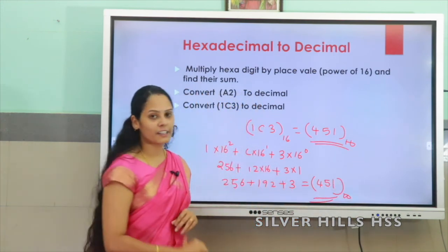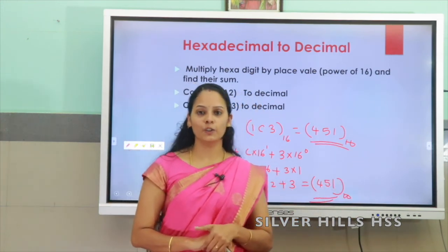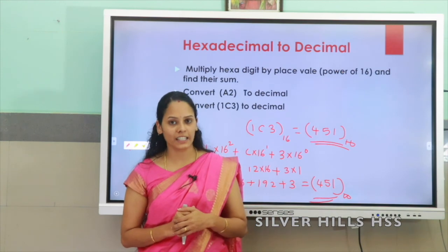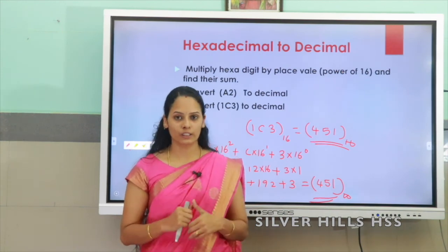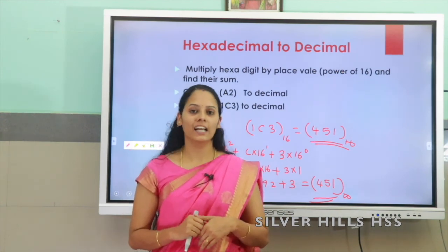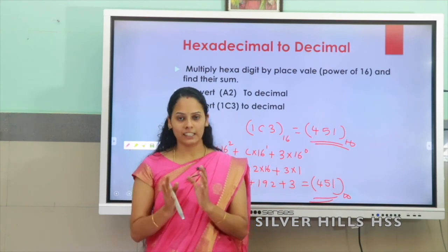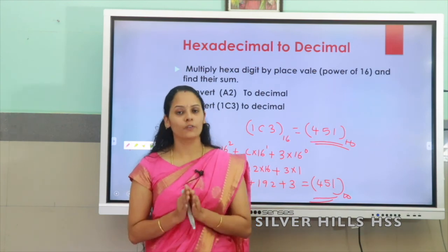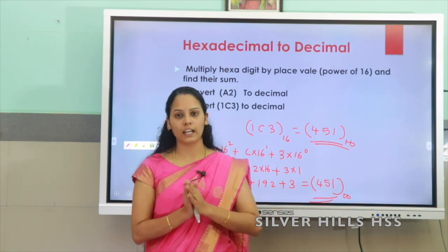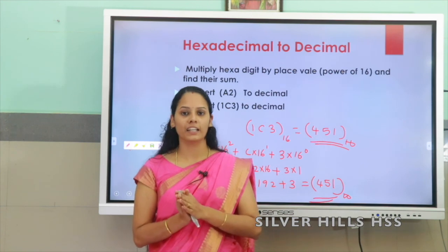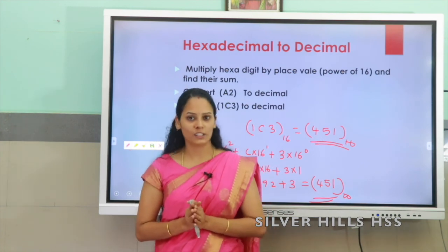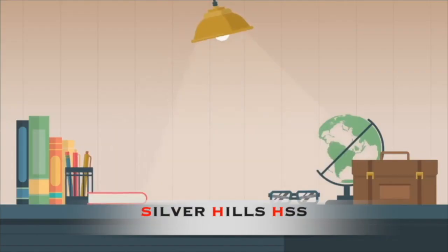This is the way to convert a hexadecimal number to decimal. So now we have seen how to convert octal, binary and hexadecimal numbers to decimal. In the next video we will see how to convert binary to octal, octal to binary, and all those conversions. Bye children, have a nice day. Thank you.